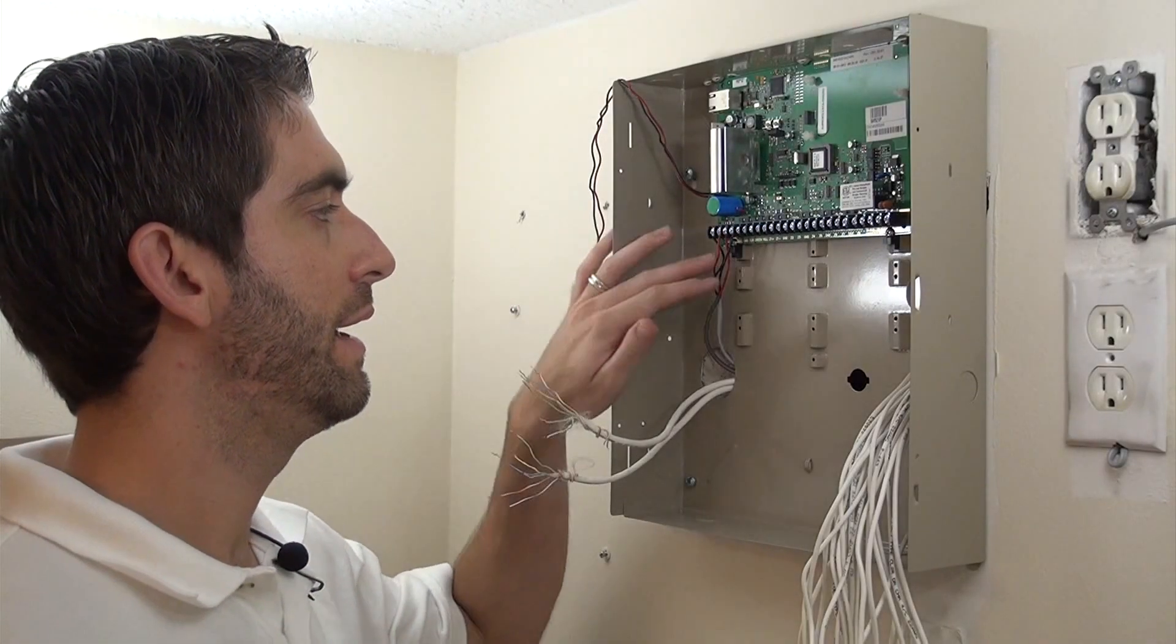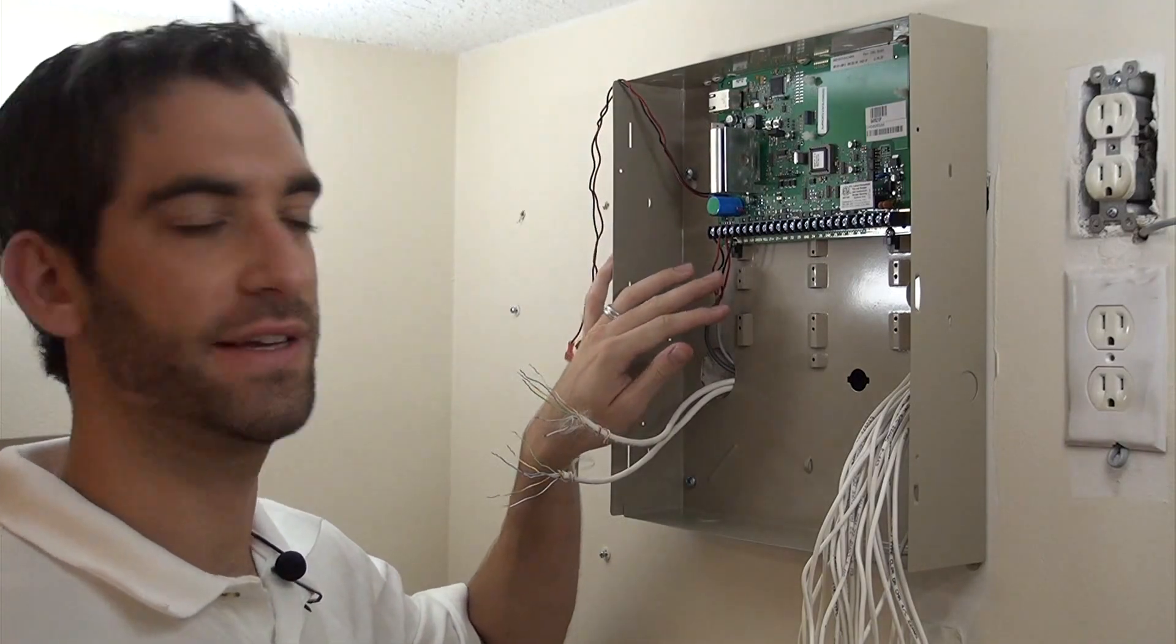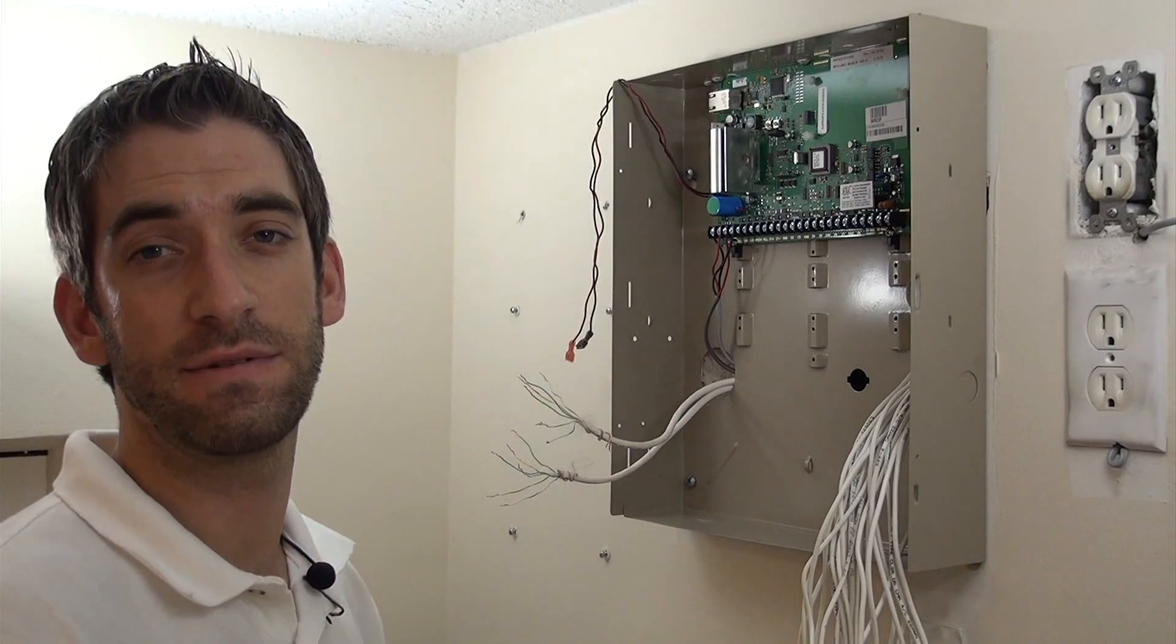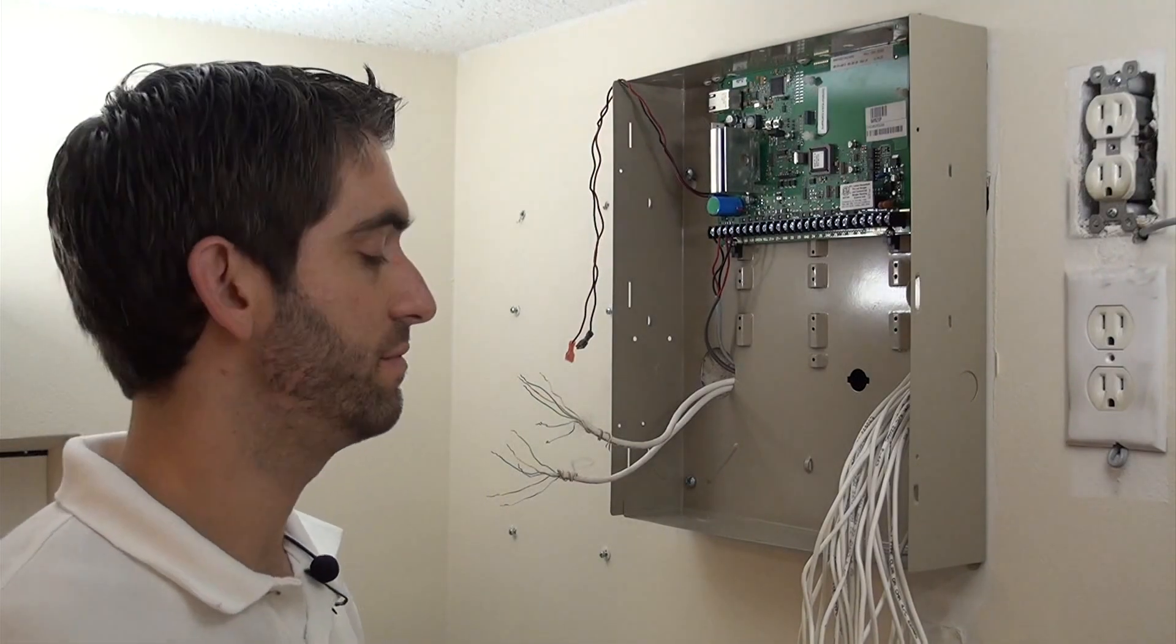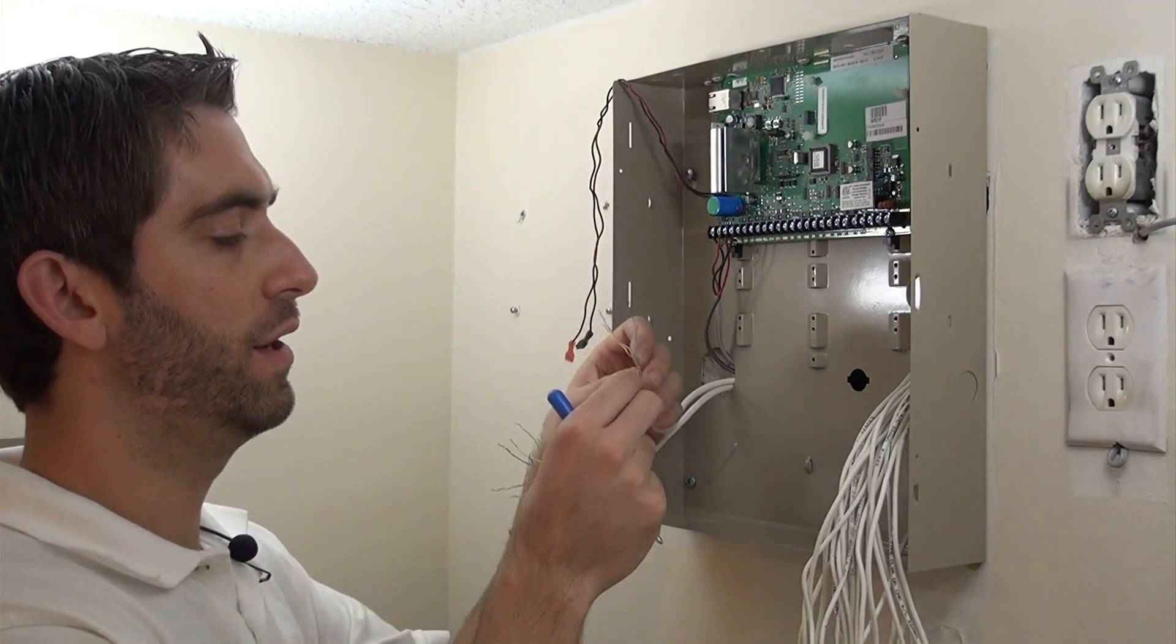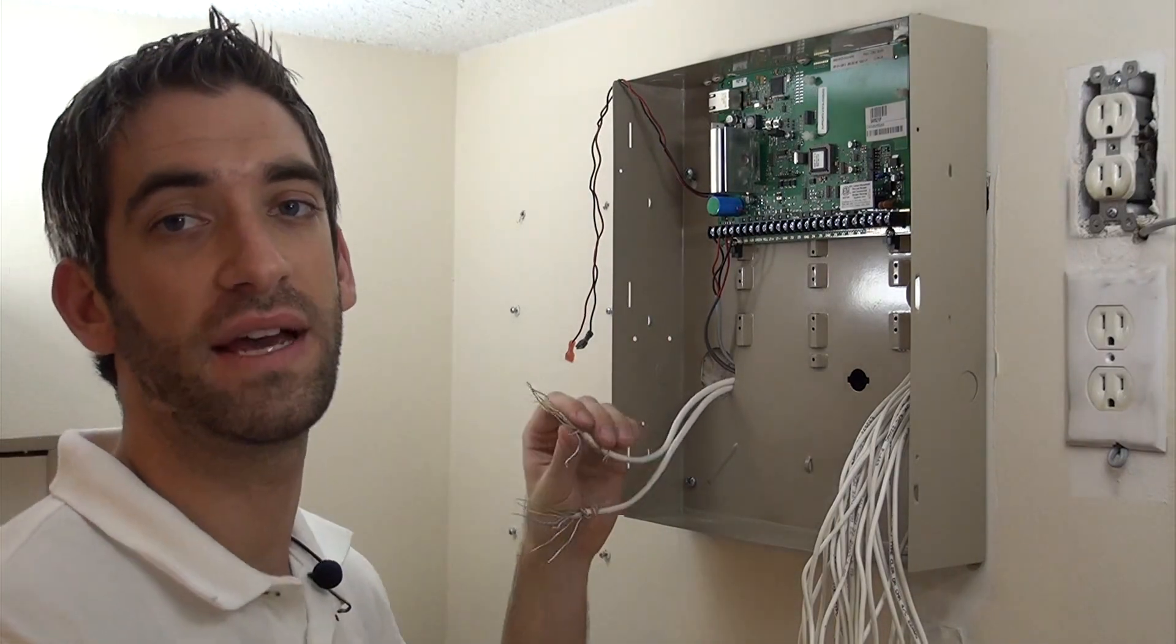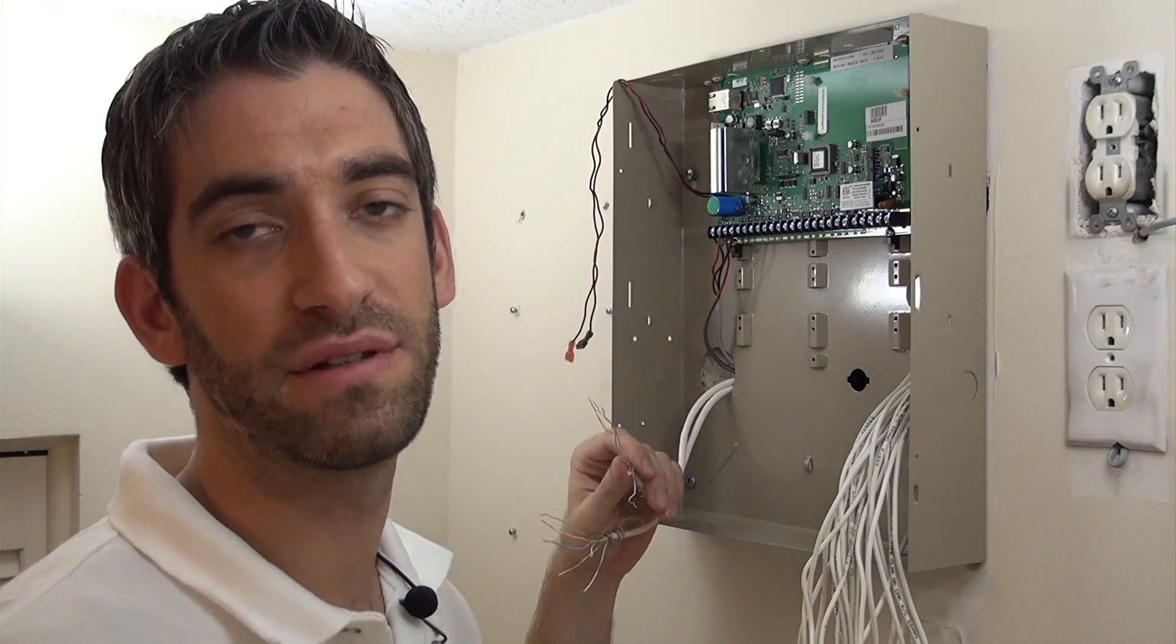Now that we have our AC power and our siren connected, we're going to land our keypad wires. The Destiny keypads have six connectors. Four are power and data—two for power, two for data—and then they have an extra two because the Destiny keypads had built-in speakers.